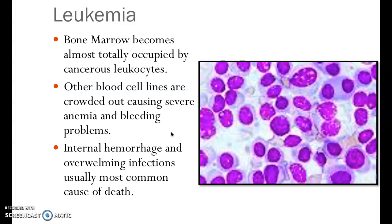Lymphadenopathy — swollen lymph nodes, especially around the jaw area — is another symptom. Bone pain shows up frequently in the sternum, ribs, and tibia. If a clinician suspects leukemia, one diagnostic approach is a bone marrow biopsy: using a needle to aspirate contents from a superficial bone like the sternum or hip, then examining it under a microscope to assess for immature blood cells.